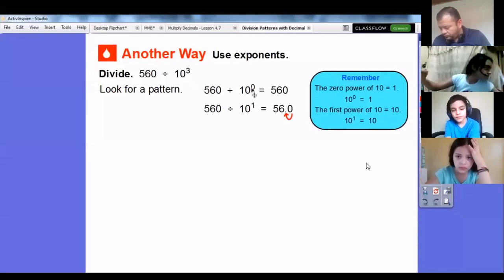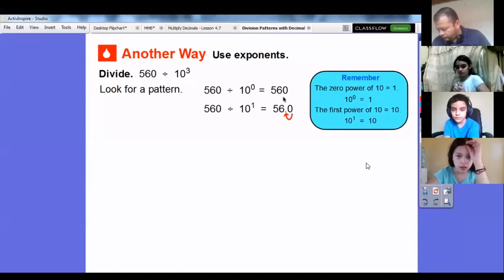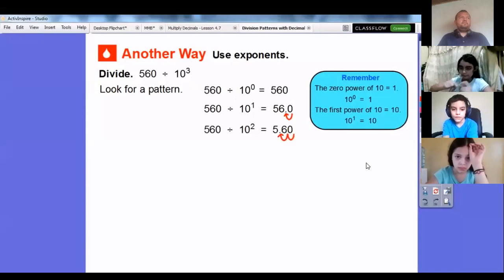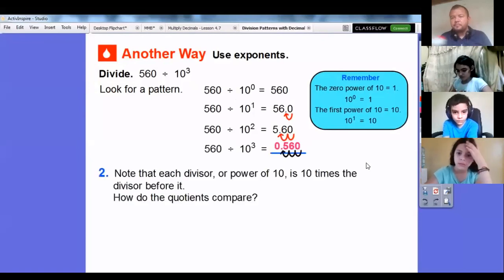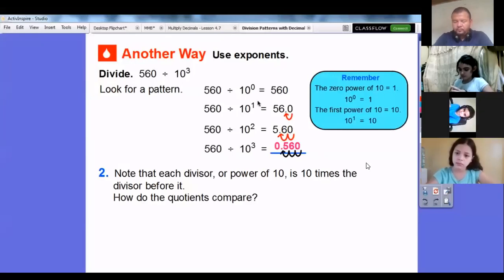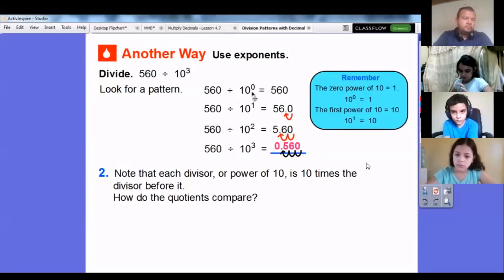560 divided by 10 to the first—this exponent is telling us how many places we'll move that decimal to the left when we're dividing by powers of 10. Here we moved zero, here we moved one place. When we divide 560 by 10 squared, that tells us two places, one, two. So what do you think 560 divided by 10 cubed is? It's going to be three places. Easy, huh?